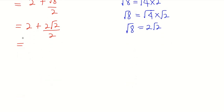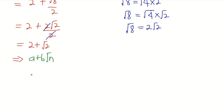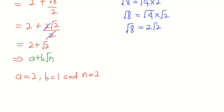Cancelling the 2s, we are left with 2 plus square root of 2. This is our solution. Comparing with the form a plus b square root of n, we can see that a equals 2, b equals 1 (the coefficient of the square root), and n equals 2. Note that n is just the number under the radical, not the square root of 2.